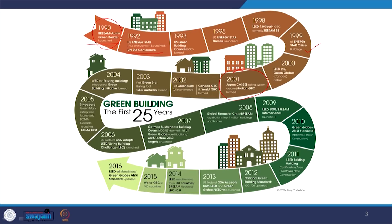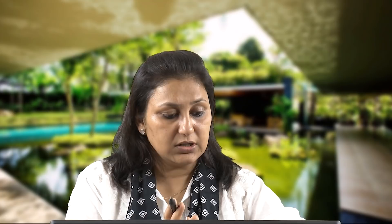We can see that a lot of momentum was picking up — from the first rating system in 1990, in 10 years several green building councils were formed and two or three more green building rating systems were launched. In 2003 Australia GBC was formed and the Green Star Rating Tool was launched. In 2004 LEED launched versions for existing buildings, diversifying from new construction, establishing a shift toward retrofitting existing buildings around 2004. In 2005 Singapore Green Mark was launched.